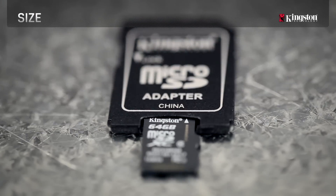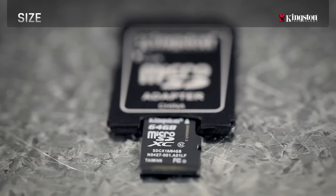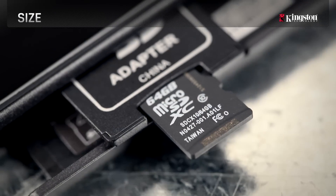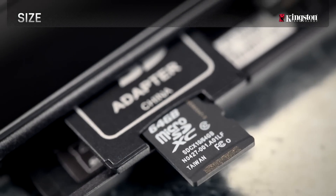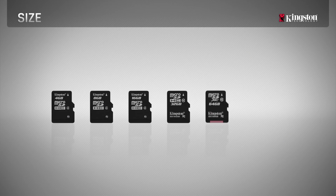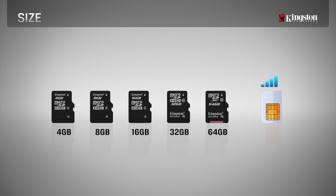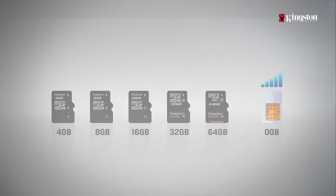They can be plugged into an adapter and used just like an SD card. Micro SD cards may look like SIM cards, but they function differently. SIM cards are designed to access cell phone networks and do not include extra storage.